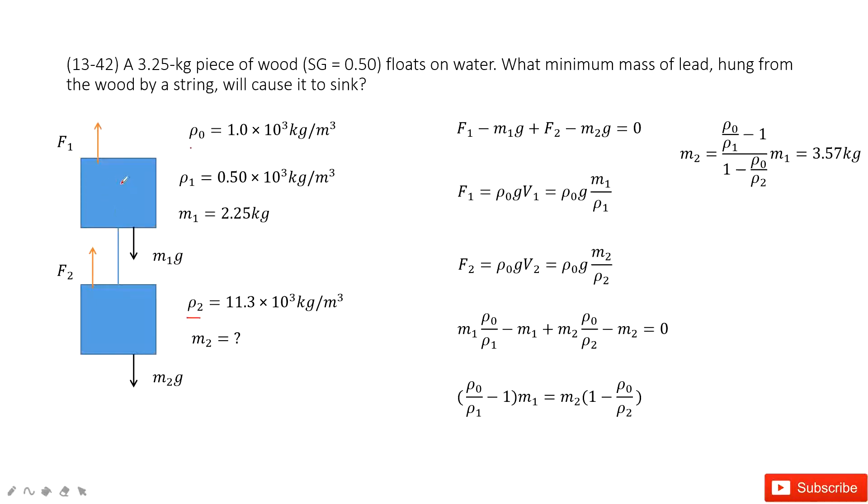Now we do force analysis for this system. First we look at object 1, it's wood. We have the buoyancy, we have the gravity m1g. Now we look at this lead object, it has a buoyancy F2, gravity m2g. Now the force is balanced vertically. So F1 minus m1g plus F2 minus m2g equal to 0.